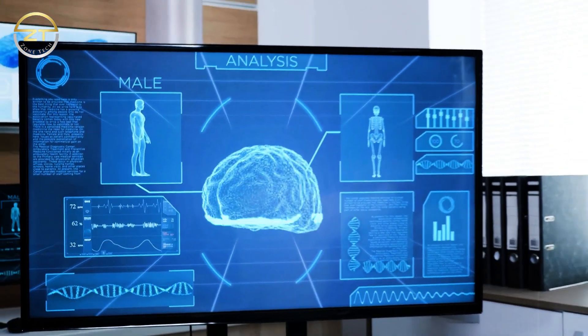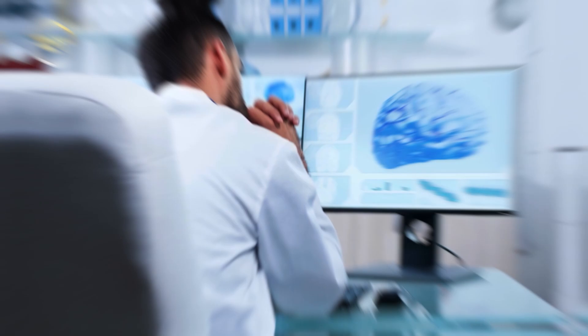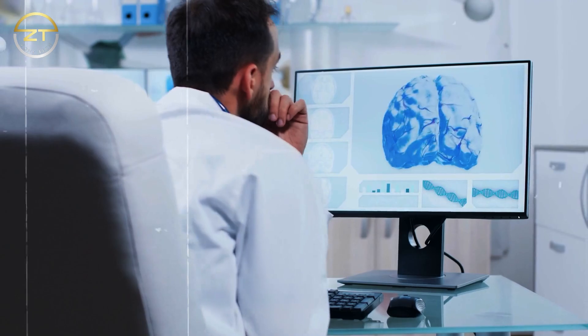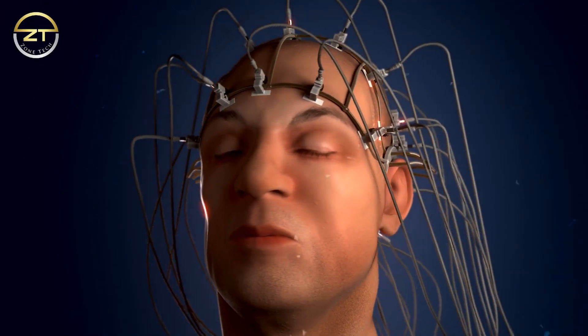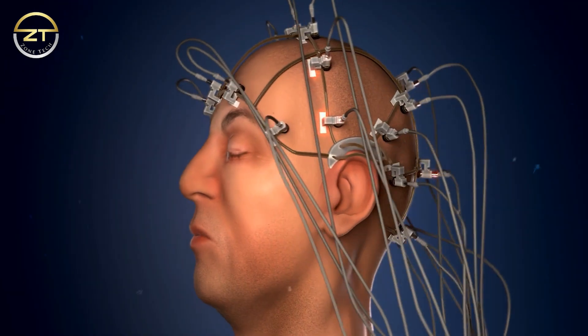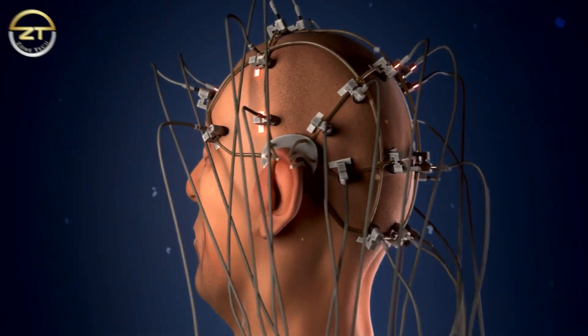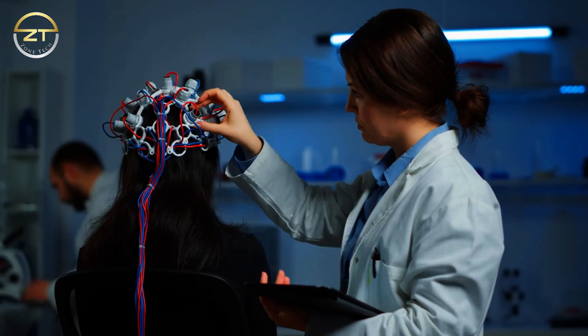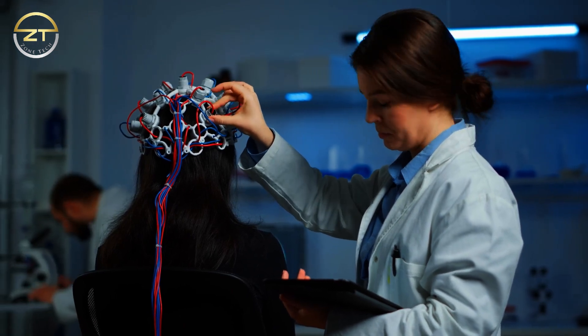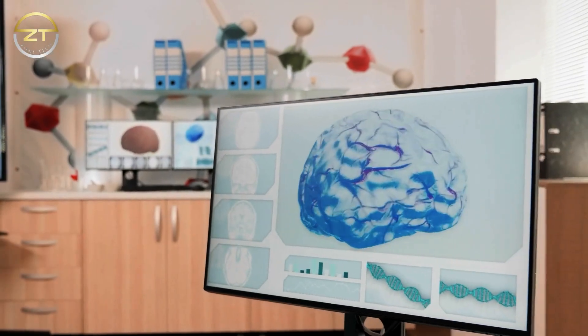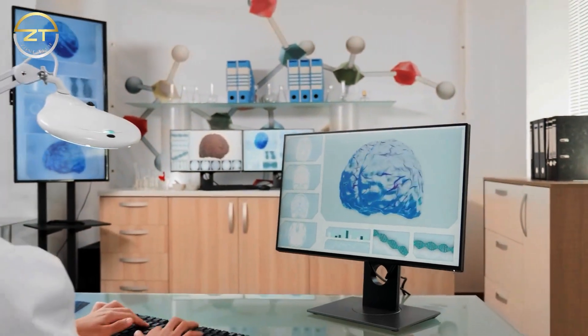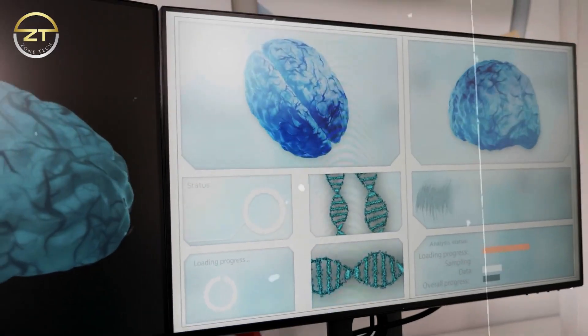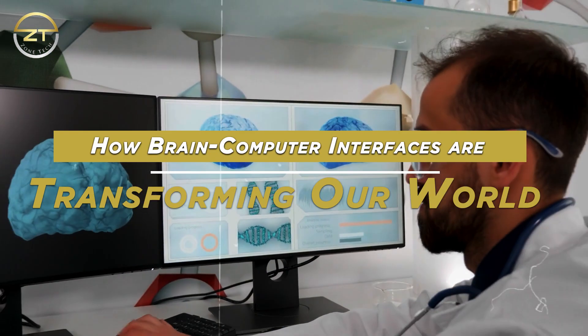Another concern is the potential for misuse of AI technologies, such as the use of facial recognition or other biometric technologies for surveillance or discrimination. Researchers in both neuroscience and AI need to be aware of these risks and work towards developing responsible and safe applications. Additionally, there are also concerns about the potential for AI to replace human jobs, exacerbate inequality, and perpetuate bias and discrimination. Addressing these ethical considerations will require collaboration between researchers, policymakers, and the public to ensure that the benefits of these technologies are realized while minimizing their potential harms.